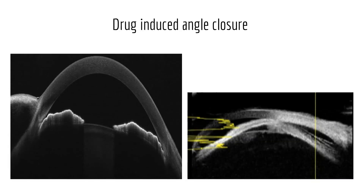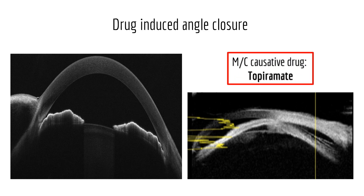Drug-induced angle closures should be suspected in cases with bilateral acute angle closure. PI is not needed in such cases, as the angle closure is due to suprachoroidal effusion. The offending drug has to be stopped.